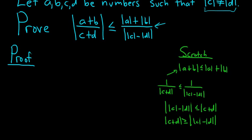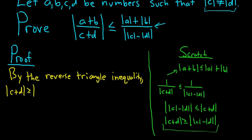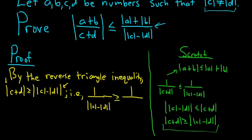Let's go ahead and prove it. This is the reverse triangle inequality, and we'll work from there to make the proof elegant. By the reverse triangle inequality, we have |C+D| ≥ ||C| − |D||. Dividing both sides by each quantity, we get 1 over ||C| − |D|| ≥ 1 over |C+D|.